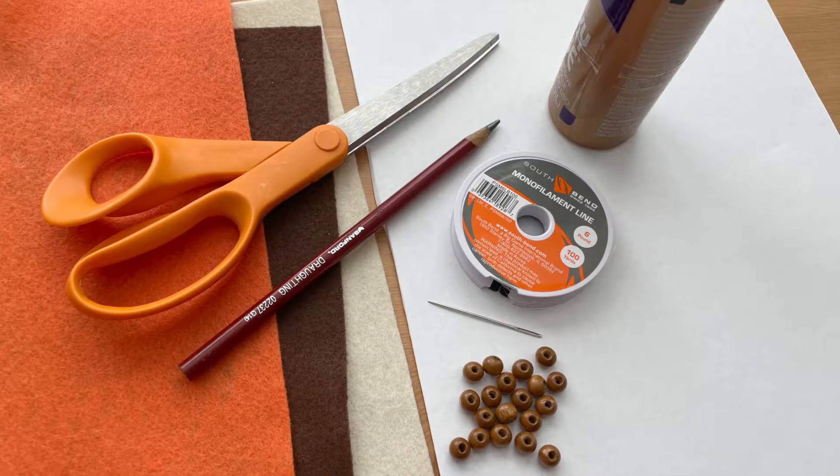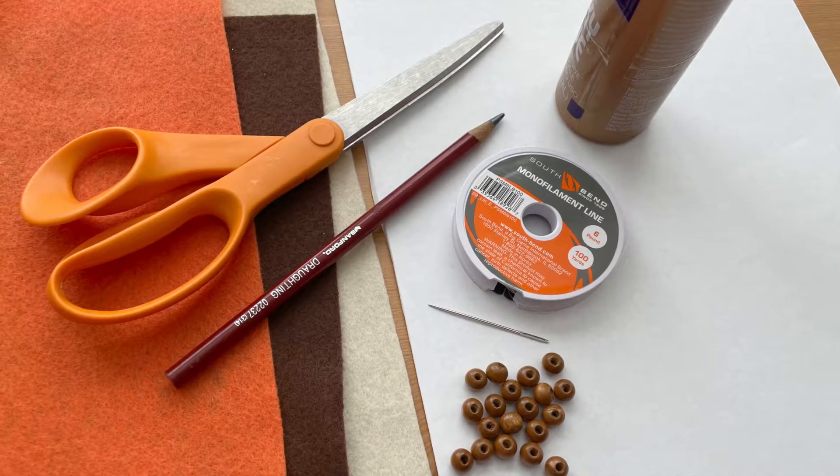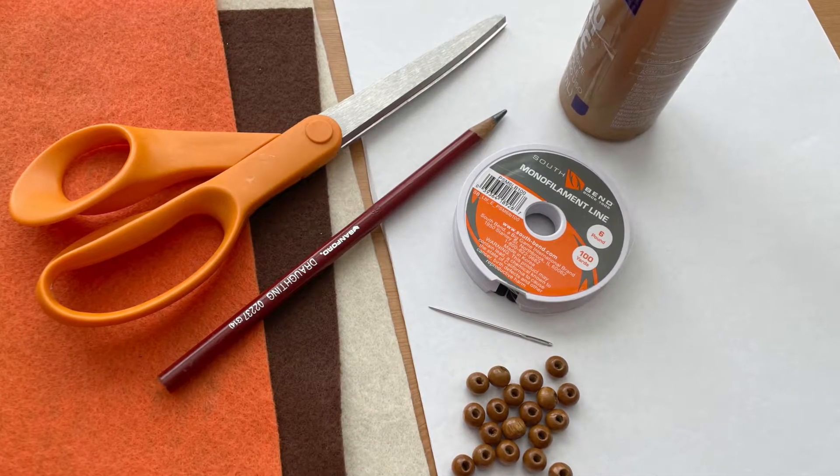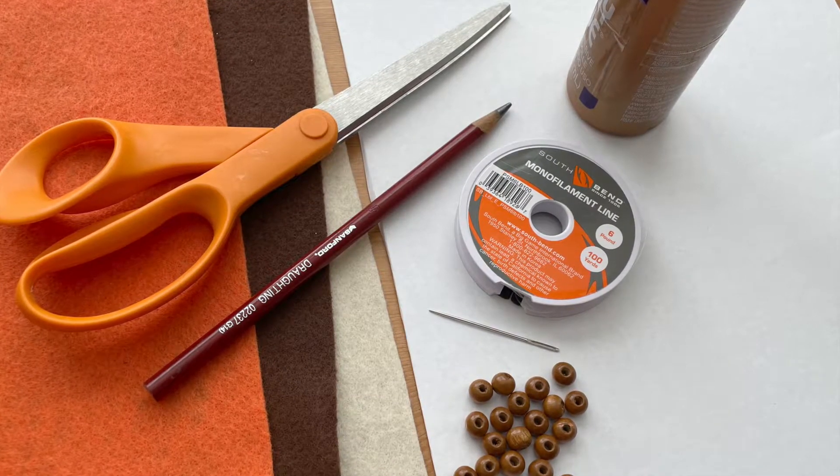For this project you will need orange, dark brown, and tan felt, paper and pencil, scissors, craft glue, cord or filament, and a needle and some beads.